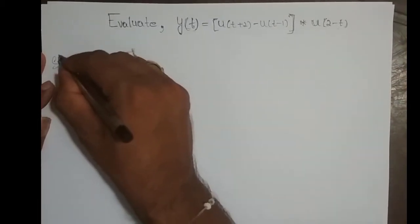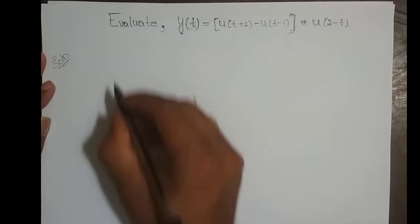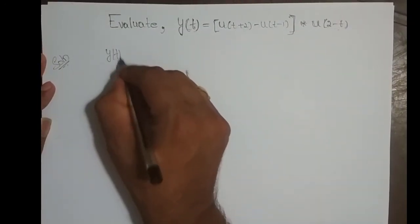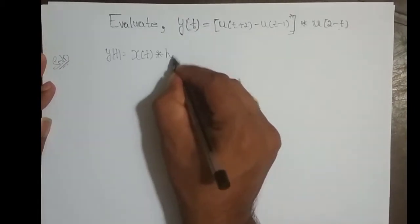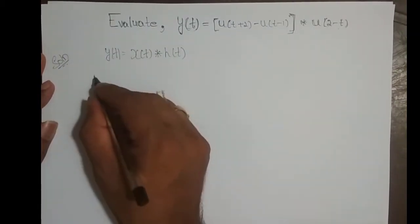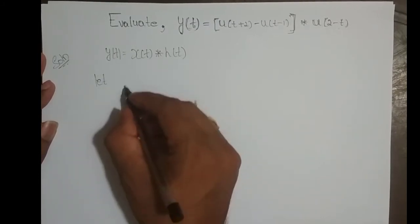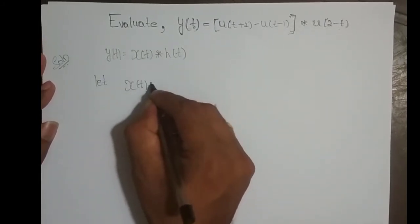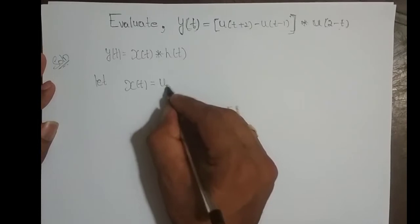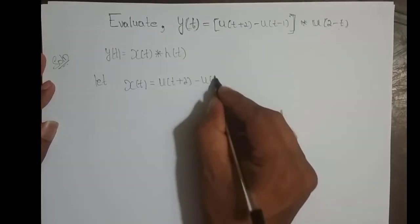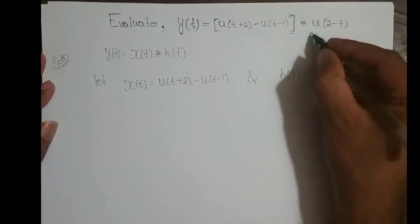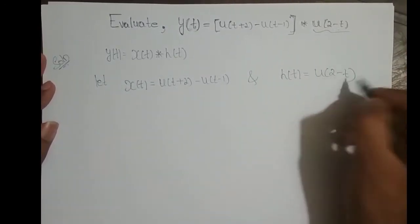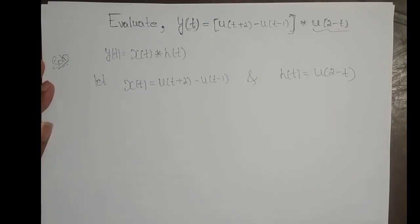So the solution: this is of the form y(t) = x(t) convolved with h(t). We will assign x(t) as the first signal, which is u(t+2) - u(t-1), and h(t) is u(2-t). We will sketch these two signals first, then see what can be done.